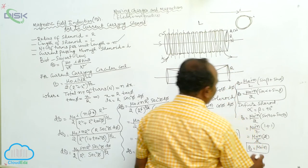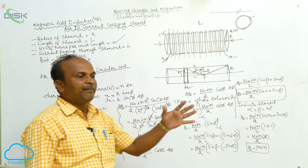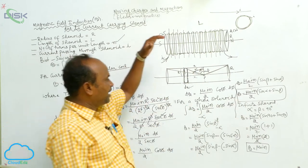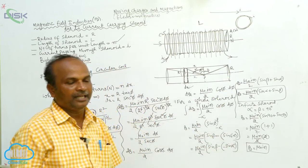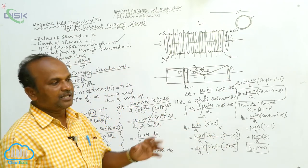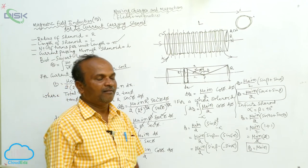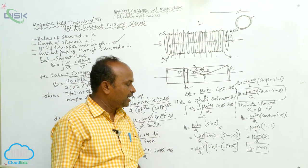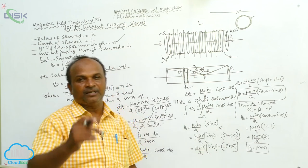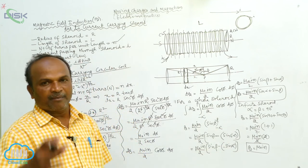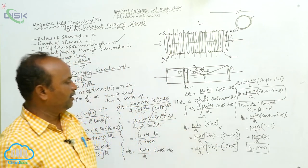Therefore, for an infinite solenoid, the magnetic field induction inside the solenoid is B equals μ₀·i·n, where μ₀ is the permeability of air or vacuum, i is the current passing through it, and n is the number of turns per unit length.